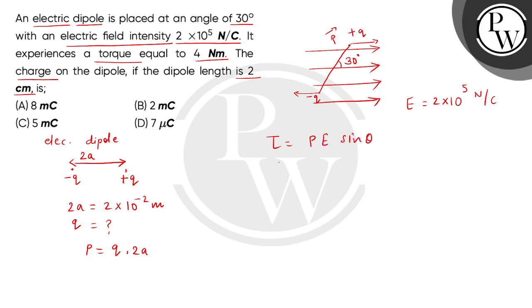So children, the torque 4 equals q multiplied by 2a multiplied by 2 × 10^5 multiplied by sin 30°. This value equals q × 2 × 10^-2 × 2 × 10^5 × 1/2. Here we get the answer as 2 × 10^-3 coulomb.